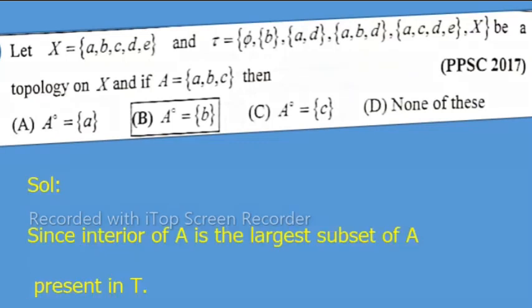Solution: Since interior of A is the largest subset of A present in topology, option B is correct. That is, A interior is equal to set b.